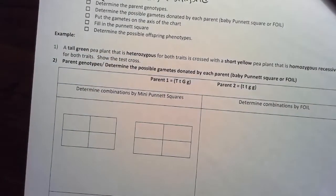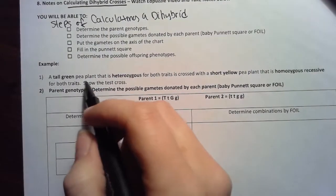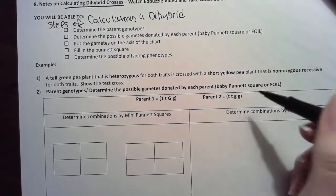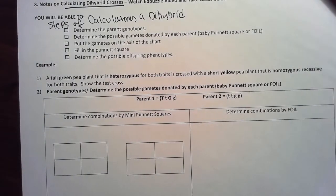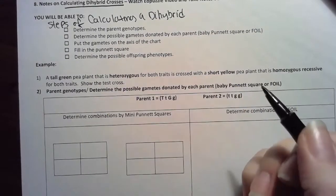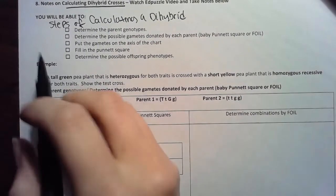First I always read my problem. A tall green pea plant that is heterozygous for both traits is crossed with a short yellow pea plant that is homozygous recessive for both traits. Show the test cross.